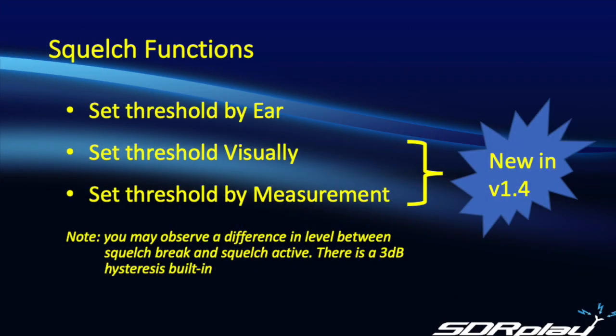That completes the overview of the squelch function in SDR Uno. We covered the three different ways by which you can set the squelch level: setting it by ear the old fashioned way, and the two new ways available in V1.4 — setting the threshold visually, or setting it by measuring the actual noise floor of the signal. It's also worth noting that there's a built-in 3 dB hysteresis in the squelch circuit. What this means is, once a signal is high enough to break the squelch, it has to drop by a further 3 dBs before muting occurs again. This prevents the annoying effect of a signal in the vicinity of the threshold causing the squelch circuit to be constantly activated and deactivated.